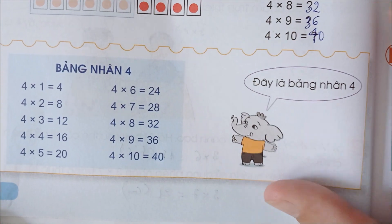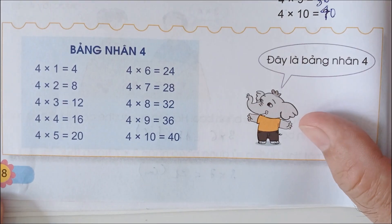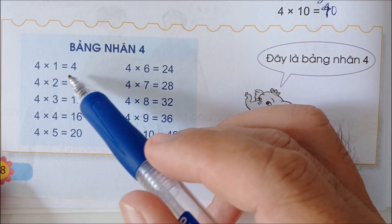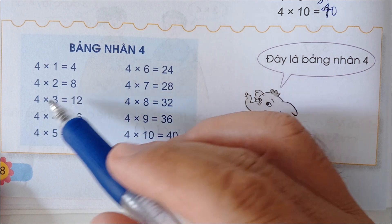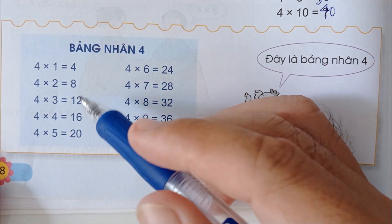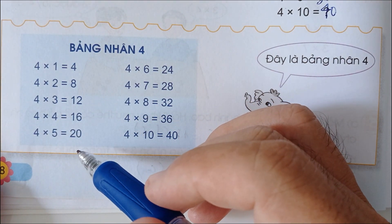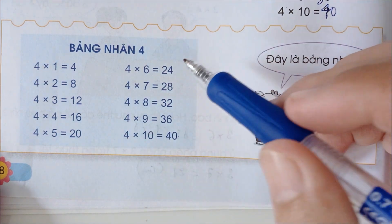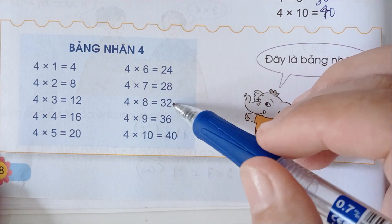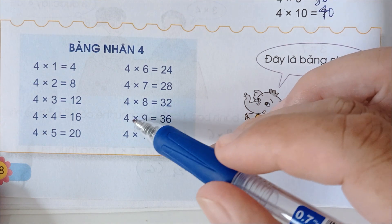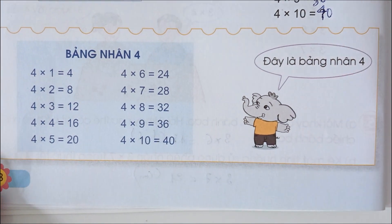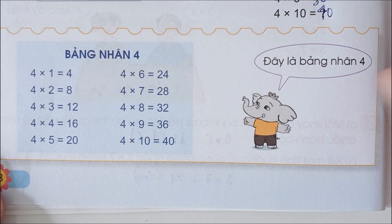Như vậy bảng nhân 4 này mình phải học thuộc nha các con: 4 x 1 bằng 4, 4 x 2 bằng 8, 4 x 3 bằng 12, 4 x 4 bằng 16, 4 x 5 bằng 20, 4 x 6 bằng 24, 4 x 7 bằng 28, 4 x 8 bằng 32, 4 x 9 bằng 36, 4 x 10 bằng 40. Đây là bảng nhân 4.